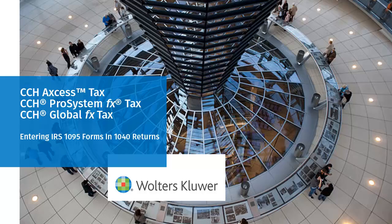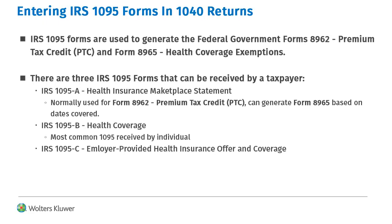Hello, welcome to the video on entering IRS 1095 forms and 1040 returns for CCH Access Tax, CCH Pro System FX Tax, and CCH Global FX Tax. IRS 1095 forms are issued by employers for health insurance and can generate Form 8962 for the premium tax credit and Form 8965. In this video we'll go through the inputs for the different 1095 forms.